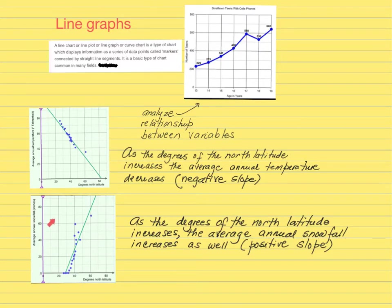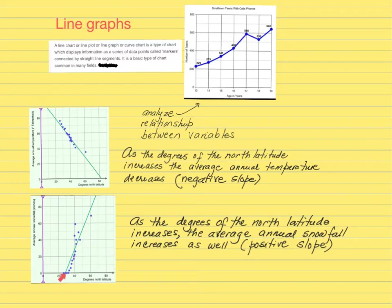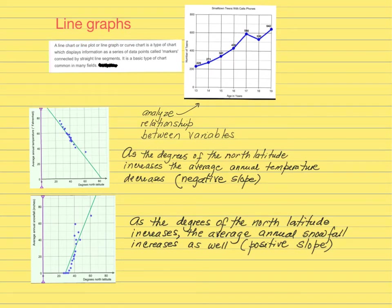In the other example, you have the same variable on the x-axis, but now you have snowfall. Here you have a line of best fit that is going up. If you look at the data plotted there, as you increase the degrees, what is happening to the annual snowfall is that it is increasing as well. That information can be drawn only after you analyze a line graph.